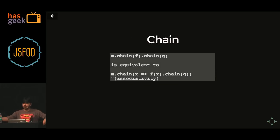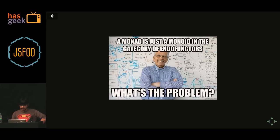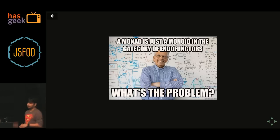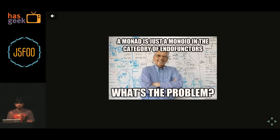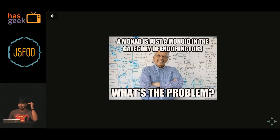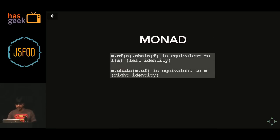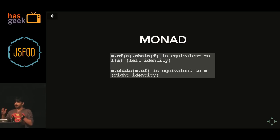Then we have chain — if you've been using lodash or underscore you'd have used the chain function: chaining of things. Anything that implements chain will also have associativity. All these things — semigroup, monoid, applicative, functor — are needed for you to understand what a monad is. A monad is just a monoid in the category of endofunctors — that's a mouthful. Monad implements chain with left identity and right identity. The fun part with monad is if a person really understands monad, they can't really explain it to anybody.